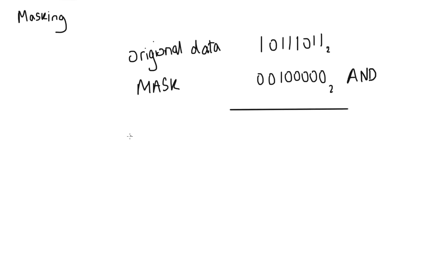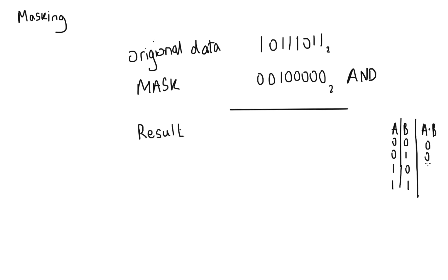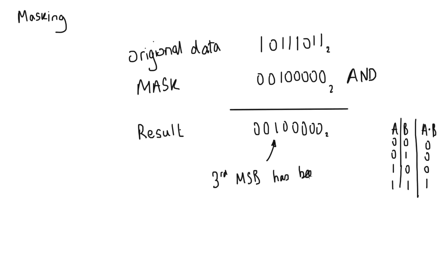Because the masking process uses the logical operator AND, I'm going to draw my truth table down here just to jog my memory. All I have to do is AND my original data with the mask, and that gives me a result of 0 0 1 0 0 0 0 0. That tells me the value of the third most significant bit, and that's exactly what masking does.